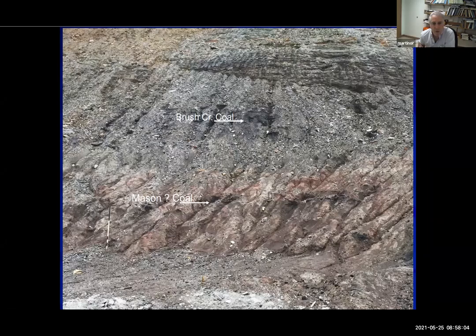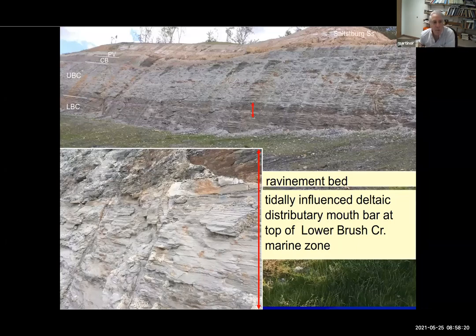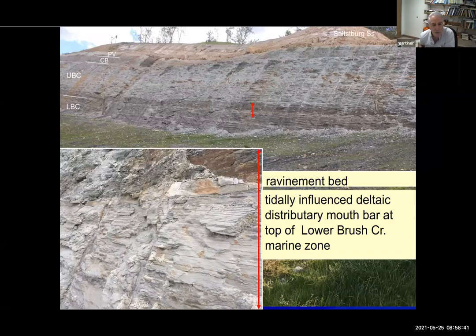This is the possible Mason horizon and the Brush Creek Coal horizon — about five meters apart at this new section along Ohio 52 near Ashland. These are the marine units in the middle part of the Glenshaw: the Lower Brush Creek, the Upper Brush Creek, the Cambridge, and just recently discovered — the Portersville. In the lower left, you can see the top of the Lower Brush Creek marine zone — a great example of tidally influenced mouth bar deposition. This is a tidal bundle with about 25 or 26 units. There's a marine ravinement bed right on top of that, and then the darker shale is the Upper Brush Creek marine zone.